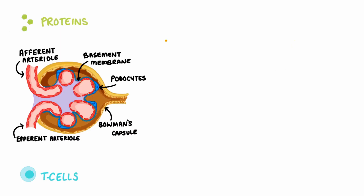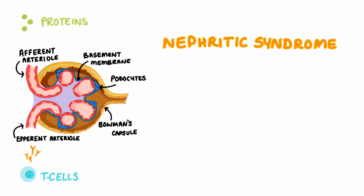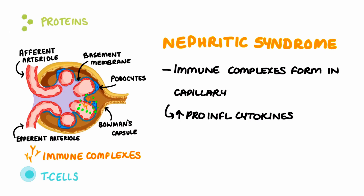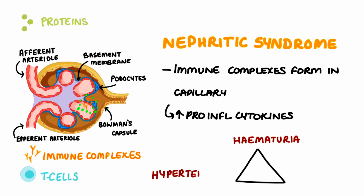So how does this differ to nephritic syndrome? Here, immune complexes form and lodge themselves in the capillary. This causes more white cells to be present and hence inflammation can occur. Due to the large amount of pro-inflammatory cytokines, these areas will break and allow red blood cells and white blood cells to break through. Hence the individual presents with hematuria, hypertension, as well as edema.